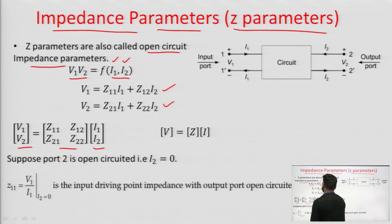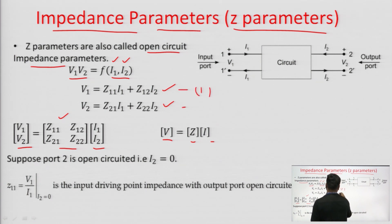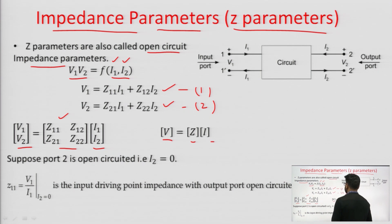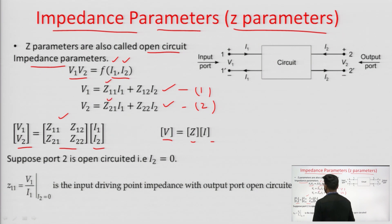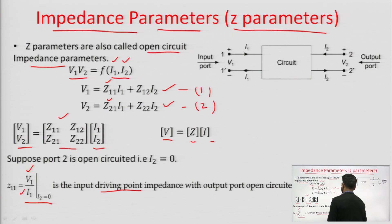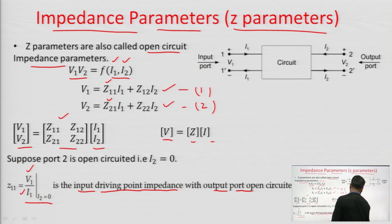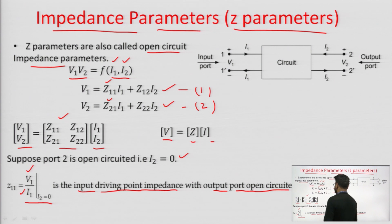We can also write this in matrix form as V = Z·I, where Z is a 2×2 matrix of all the parameters. To find Z11 and Z21, we set I2 = 0. Z11 = V1/I1 with I2 = 0. Since port 1 voltage and current are associated, this is the input driving point impedance with output port open circuited. Z21 = V2/I1 with I2 = 0, which is the forward transfer impedance with output port open circuited.